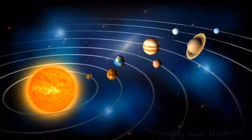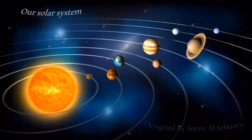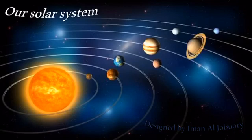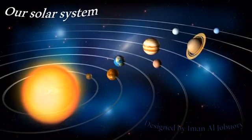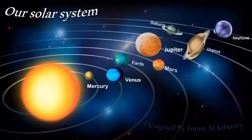Track 70. Listen and say the rhyme: Our solar system. Eight planets go round the sun, we can name every one.